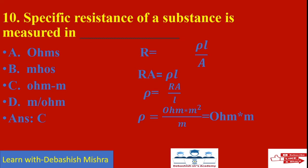Specific resistance of a substance is measured in what units? We know R = ρL/A, so ρ = RA/L. The unit of resistance is ohm, cross-sectional area is meter squared, and length is meter. So meter squared divided by meter gives meter. Therefore specific resistance is ohm times meter. Answer C is the correct answer: ohm·meter.